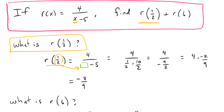So I'm going to put 1 half in right here. If we take 1 half minus 5, before we can make that subtraction we need to get a common denominator. So let's multiply by 2 over 2 here. 5 times 2 is 10 over 2. So we can subtract the top: 1 minus 10 is negative 9.